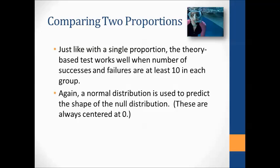Just like with a single proportion, when moving to theory-based tests for two proportions, it works fairly well when there's at least 10 successes and 10 failures in each group. With this dolphin study, we didn't have that, so it would not be a good candidate for a theory-based test. Normal distributions are used because our null distribution fits that nicely. These null distributions for differences are always centered at zero, unlike the first chapter where they're centered on the value under the null hypothesis.